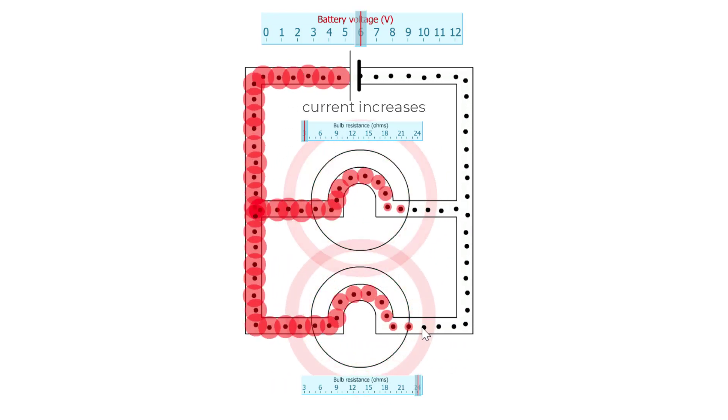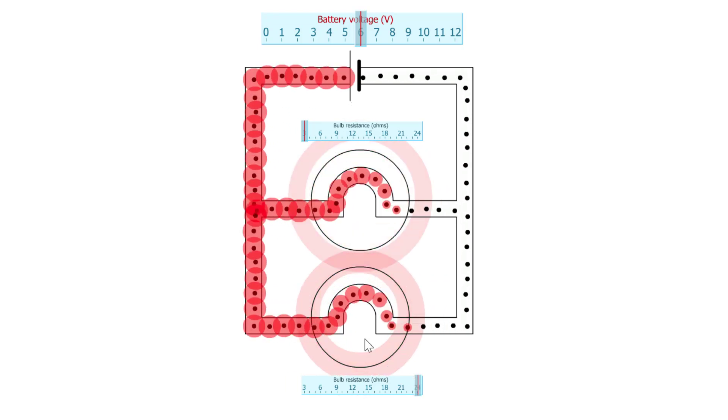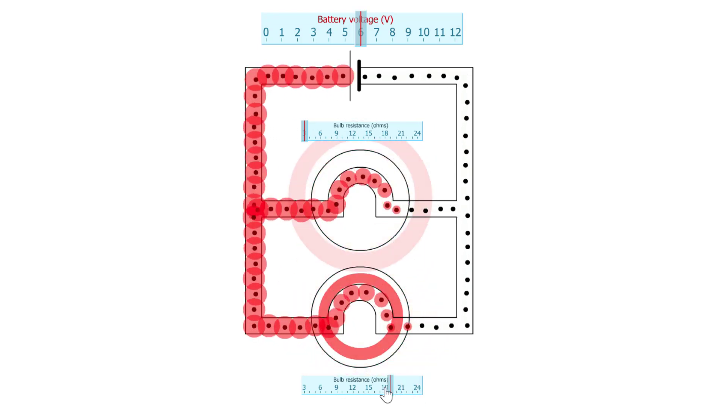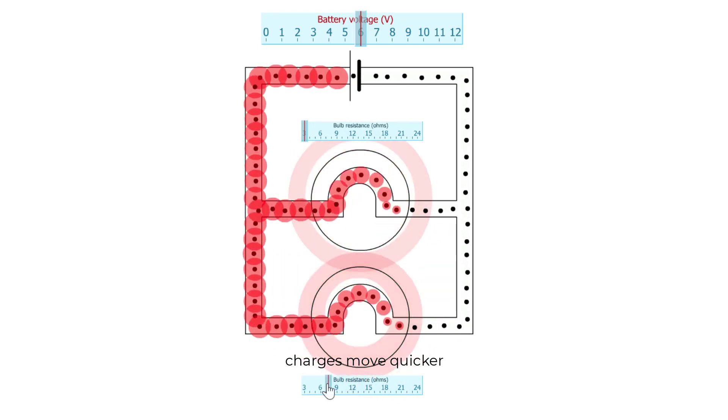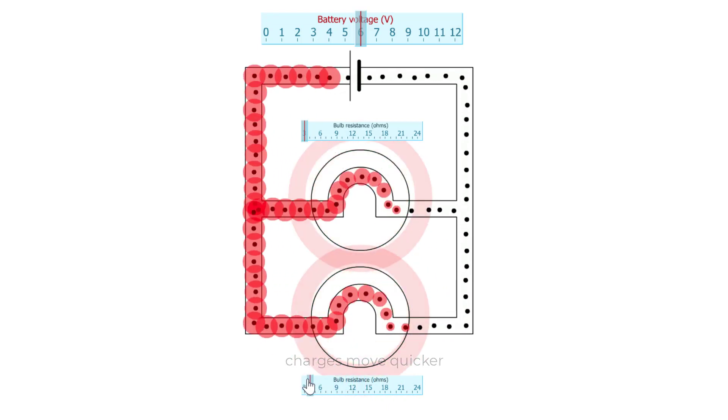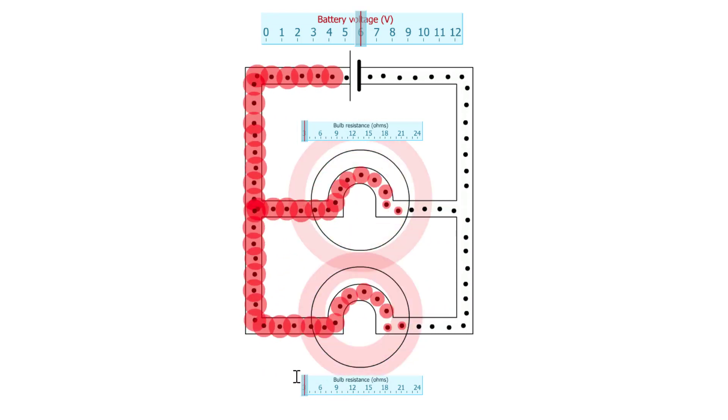Look, these ones are still going slowly but if I reduce the resistance and make the current in this bottom one bigger as well, these ones leaving the battery and arriving at the battery will move even quicker. Watch. So quicker and quicker through the bottom bulb and even quicker through the battery.